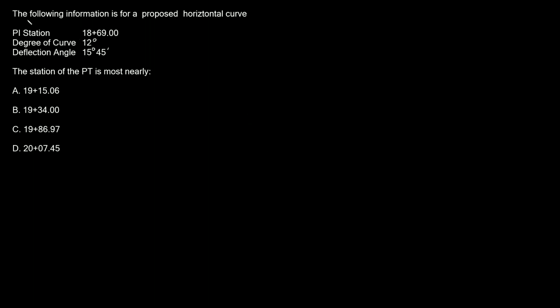The problem says the following information is for a proposed horizontal curve. The PI station or point of intersection station is at 1869, the degree of curvature is 12 degrees, and the deflection angle is 15 degrees 45 minutes. The station of the PT, the point of tangency, or in other words the end of the curve, is most nearly, and then it gives us these four options.